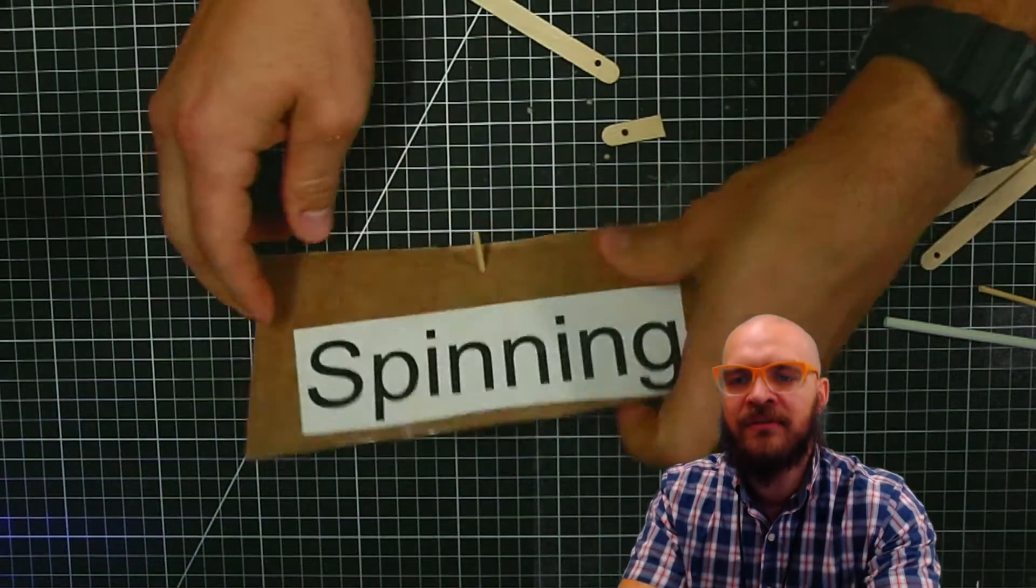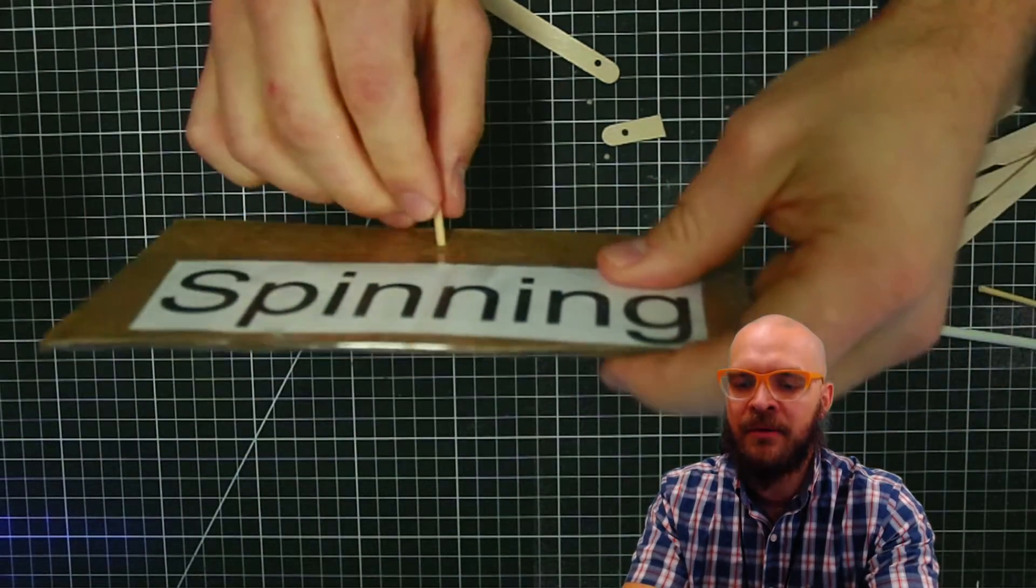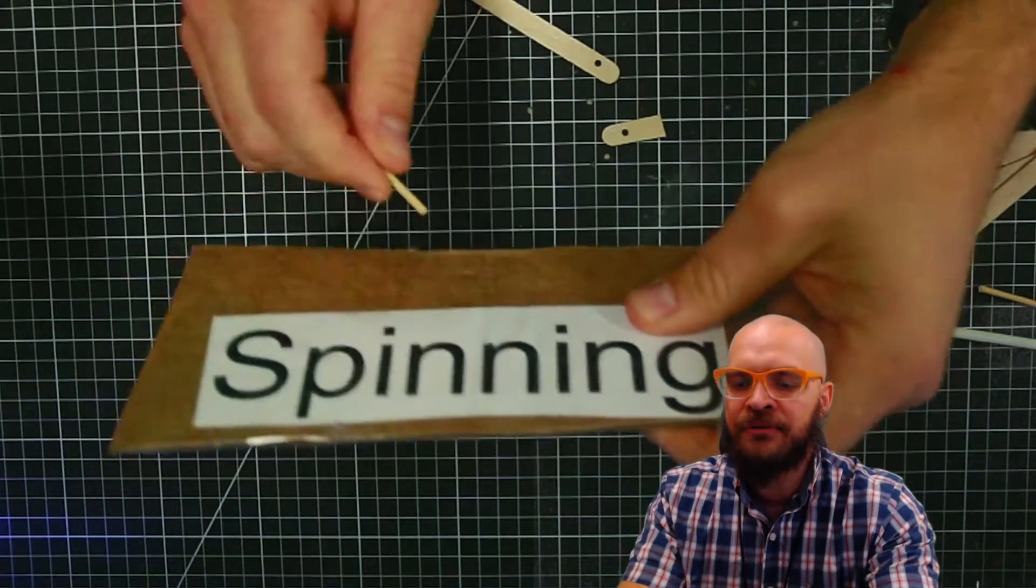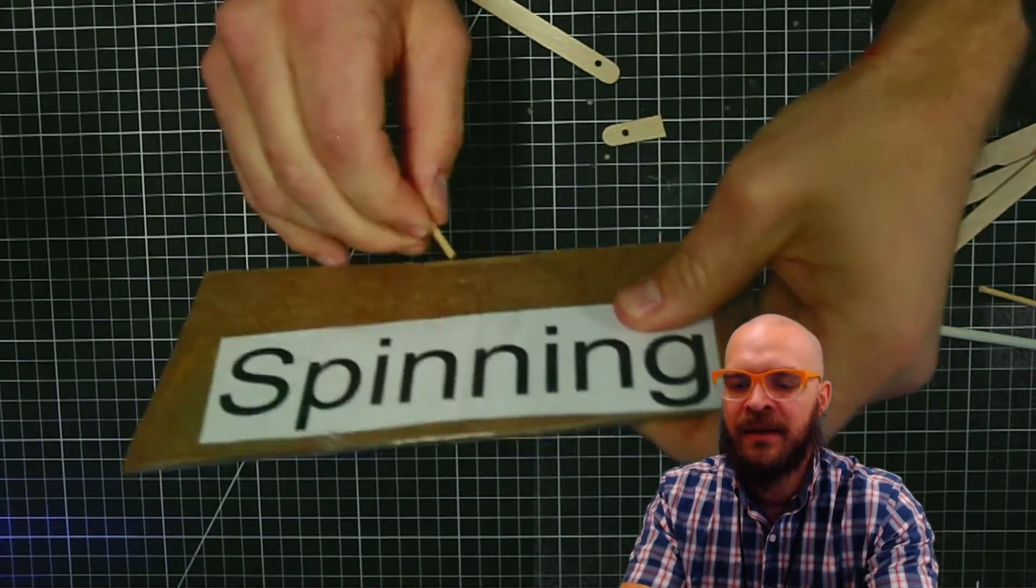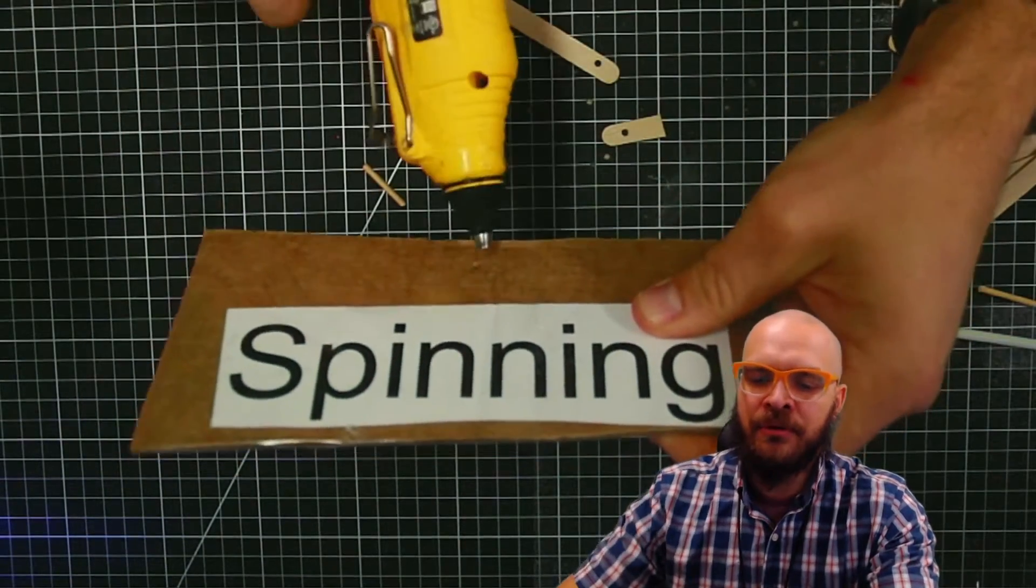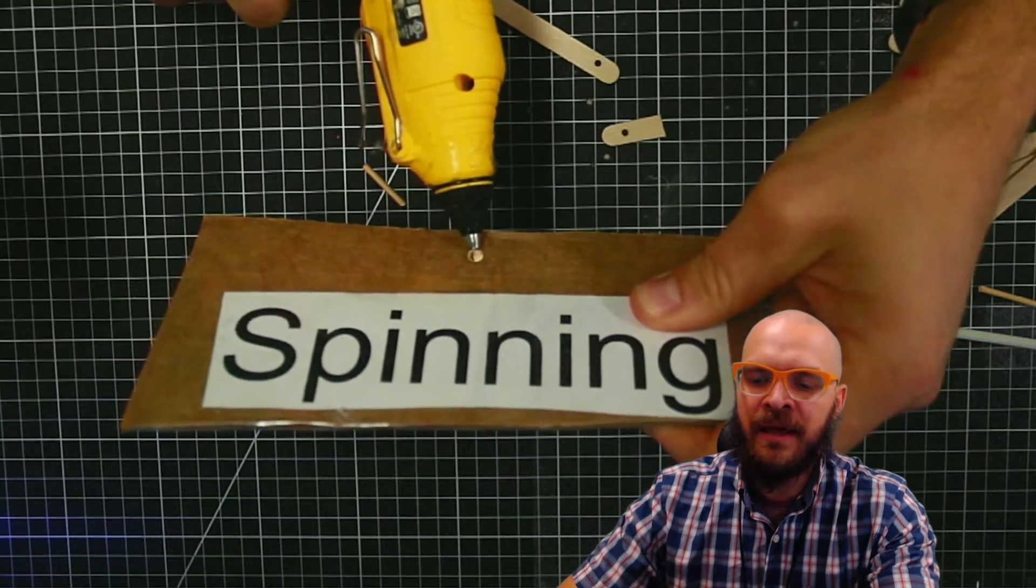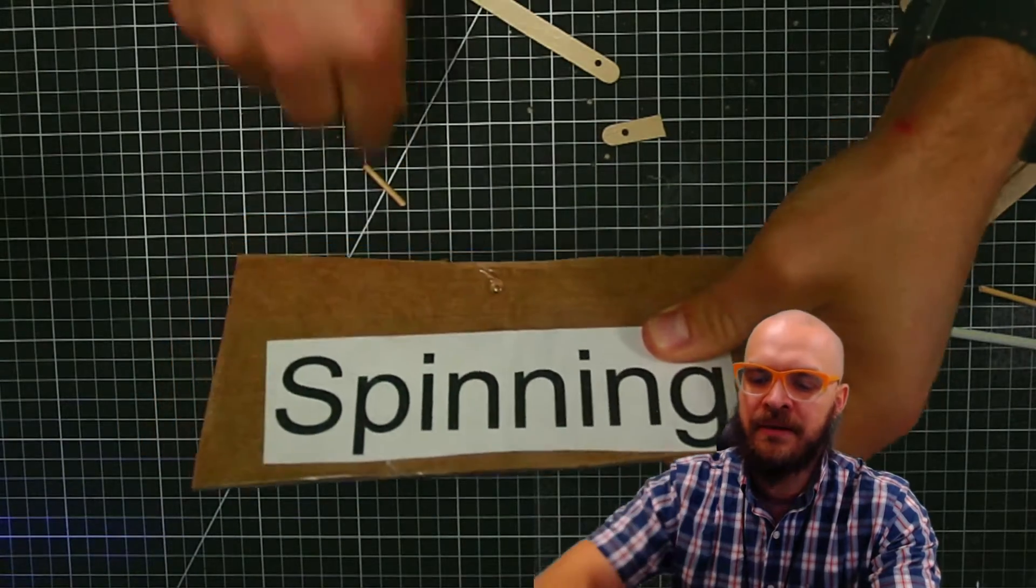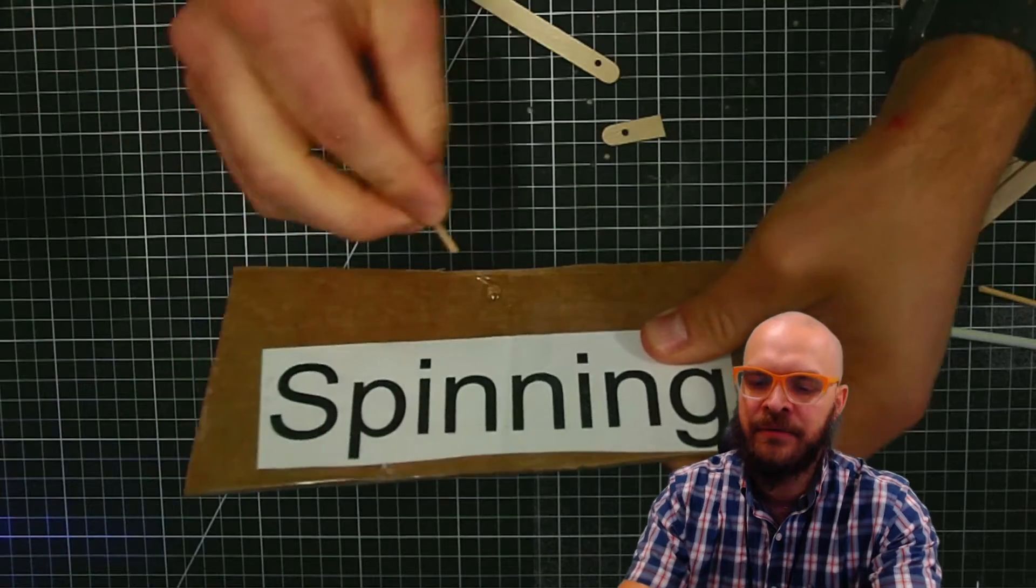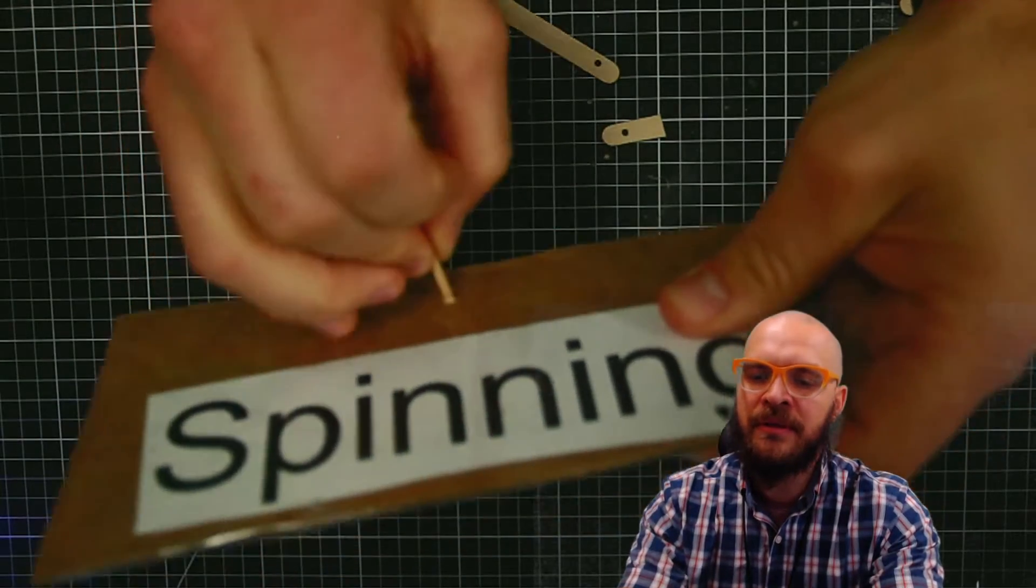So I've got this piece stuck into the cardboard, but here's the trick to gluing something like this. Take it back out and put some glue into that hole. Now it's gluing itself into the hole that we're sticking in there.